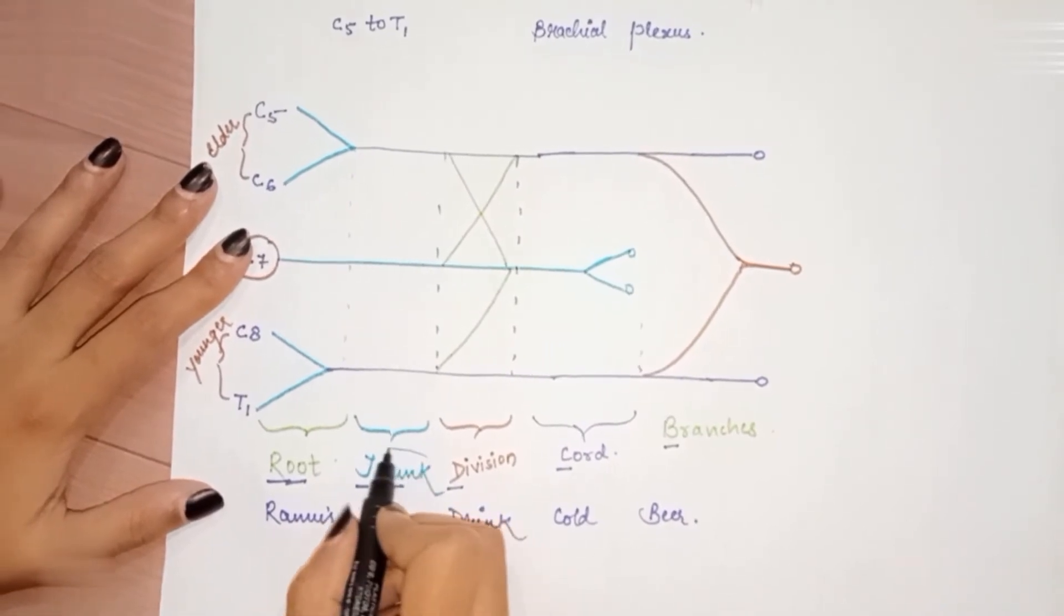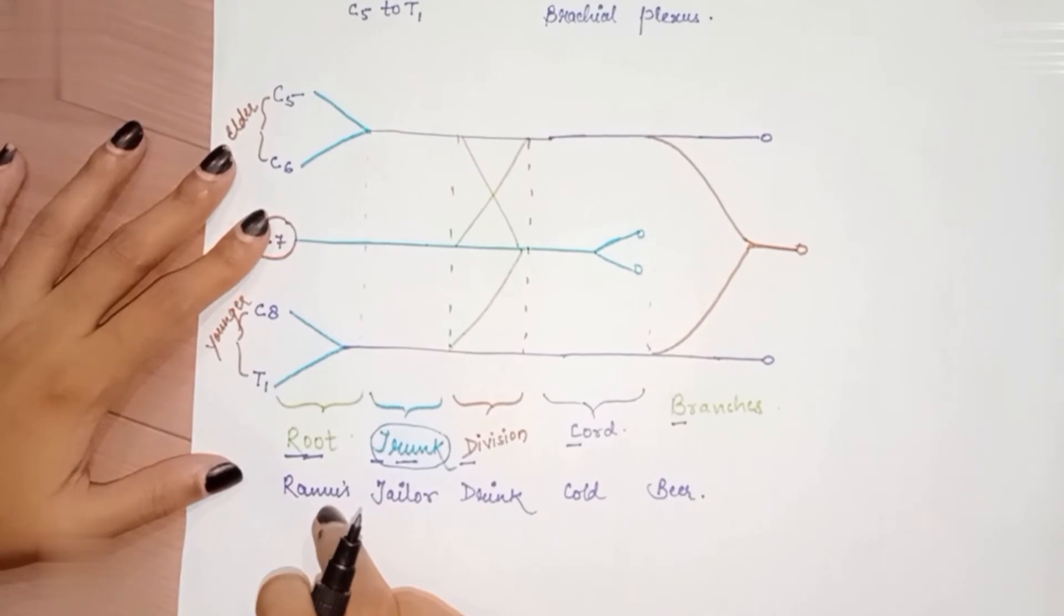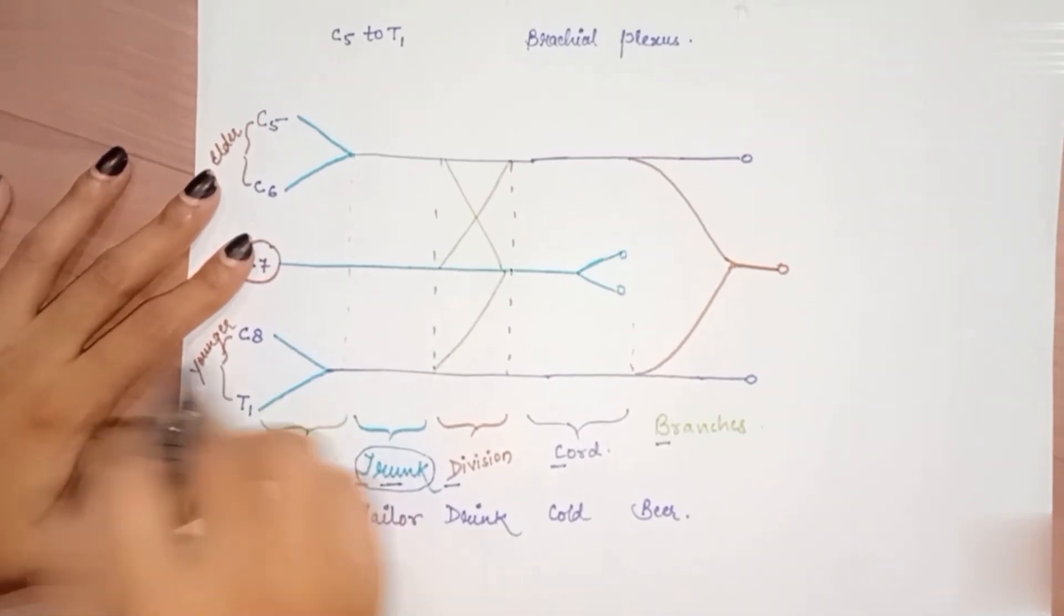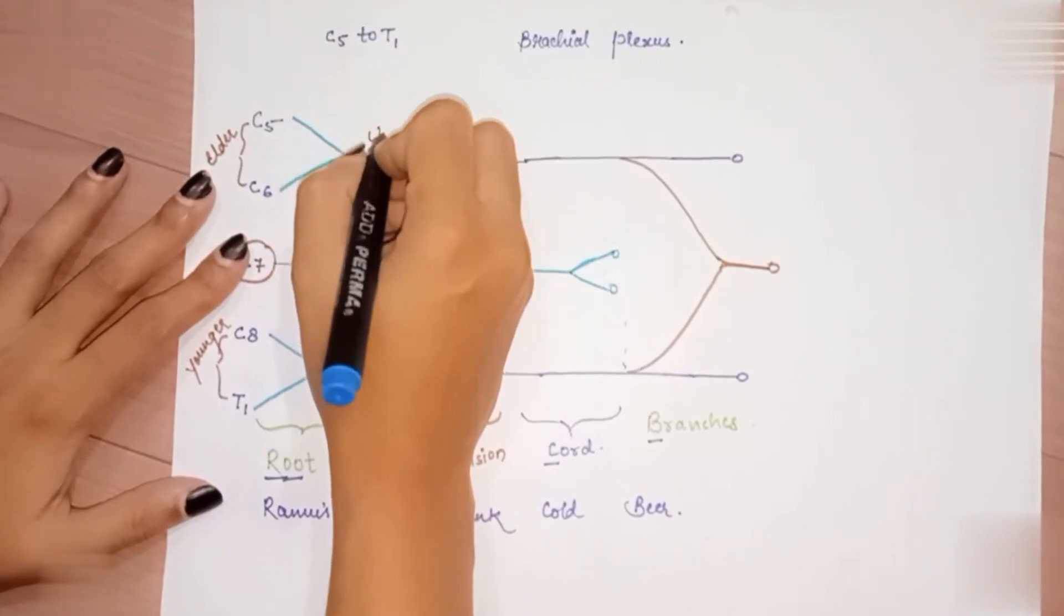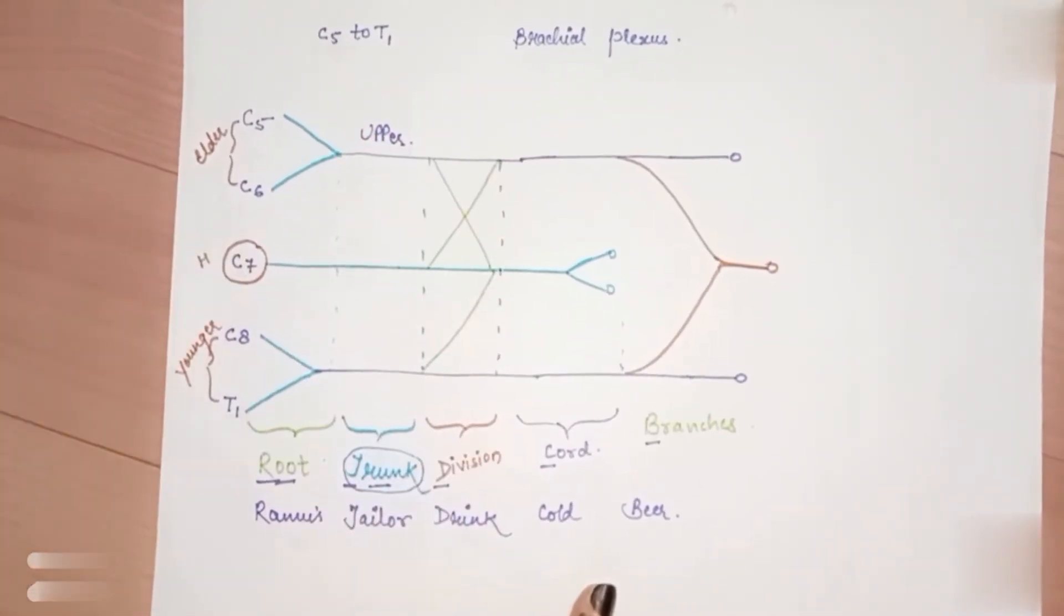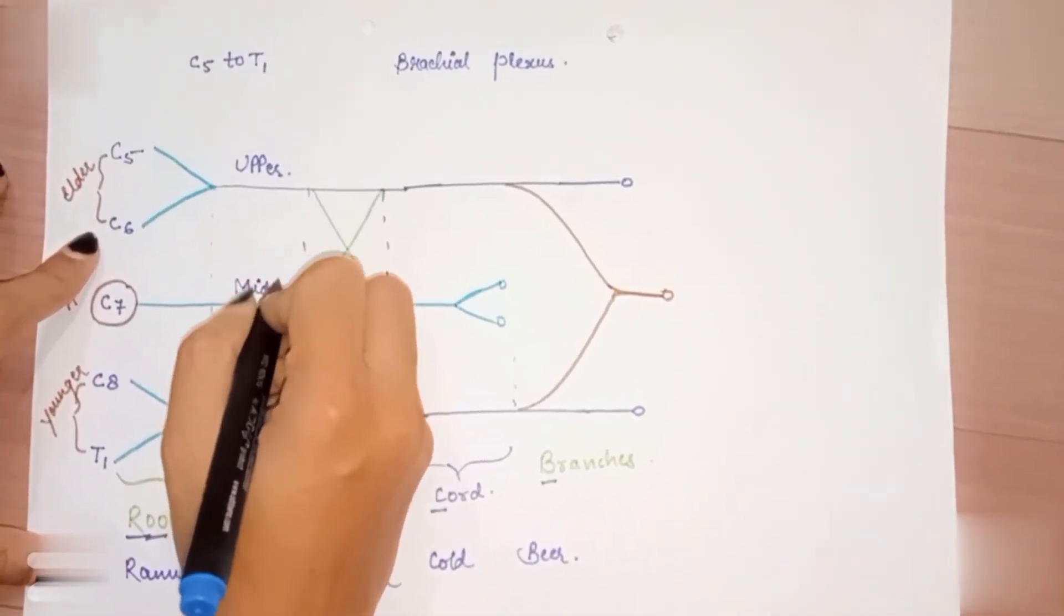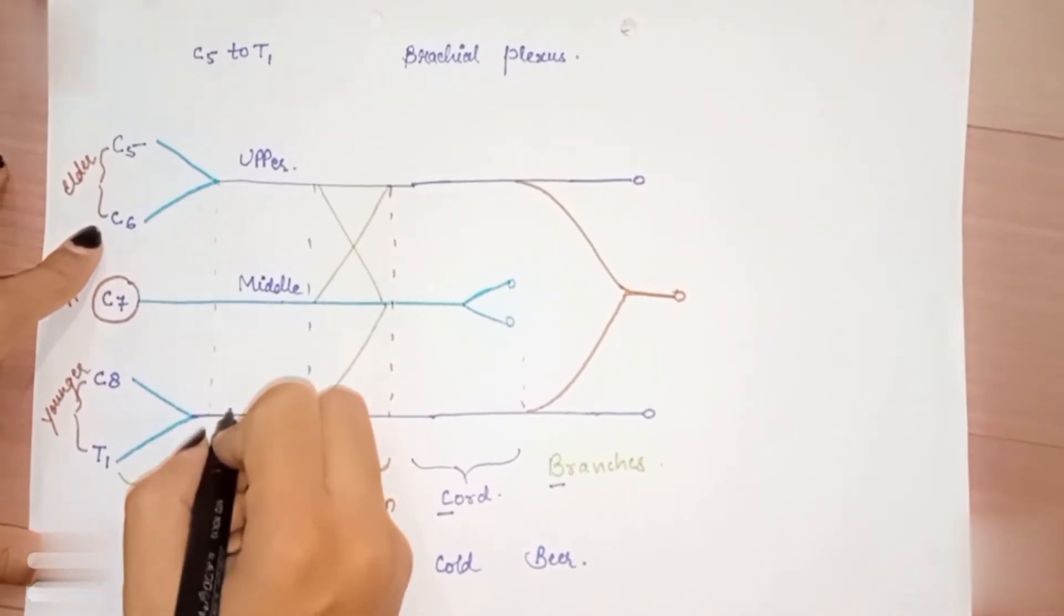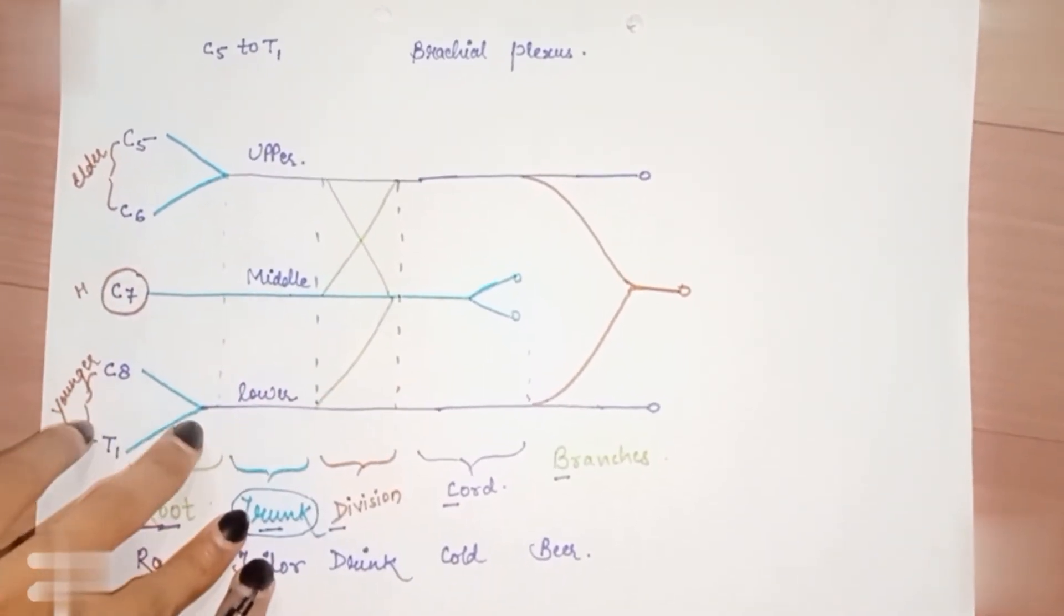Now what about the trunks? Trunk is divided into three. Here is the upper trunk: C5 and C6. C7 is the medial trunk. C8 and T1 is the lower trunk. Done with it.